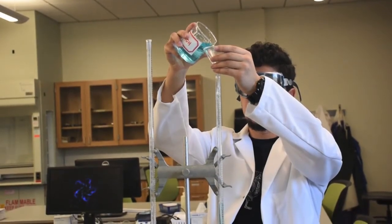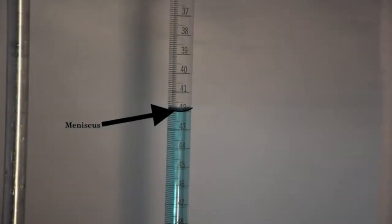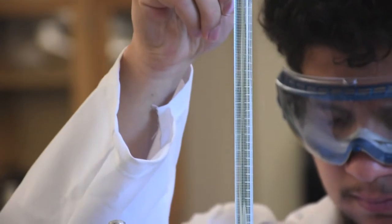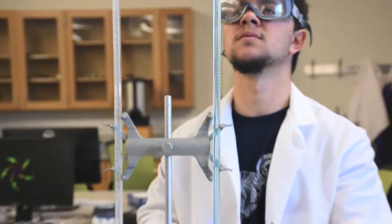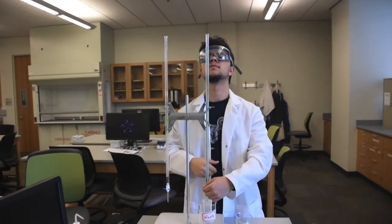When reading the initial volume of the burette, make sure you take the reading at the bottom of the meniscus. For opaque liquids like potassium permanganate, use a flashlight to get a better view of the meniscus. If you have overfilled your burette past the graduations, you may turn your stopcock just a little bit to dispel some liquid.